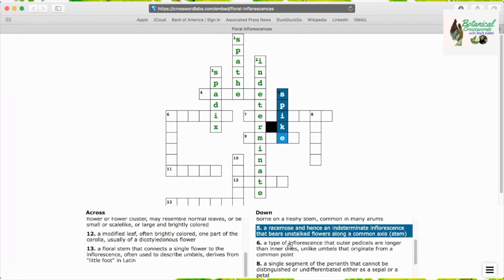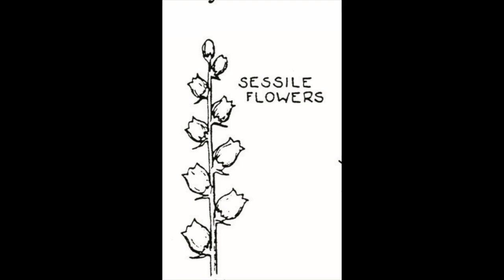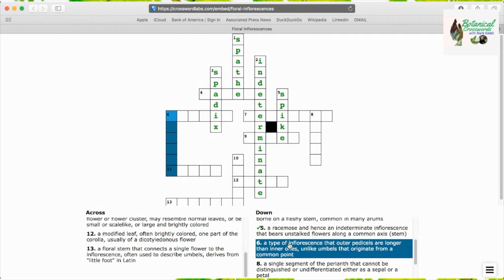Spike is the next answer, a racemose and hence an indeterminate inflorescence that bears unstalked flowers along a common axis or stem.